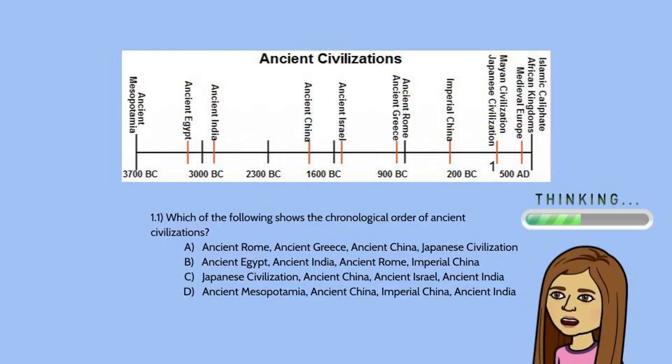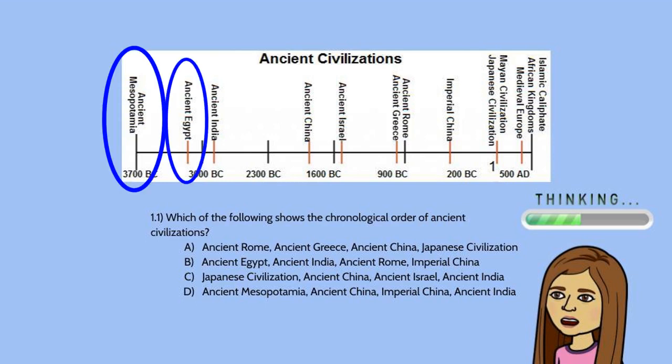Now if we were going to look at a problem — I'm going to throw that up there so you can see — where you have different civilizations arranged in different orders of time, and we're asked which of the following shows the chronological order of ancient civilizations, the first thing I would do is look to see which civilization would come first. The first one would be either ancient Mesopotamia, ancient Egypt, or ancient India. Ancient Mesopotamia was the first one that happened.